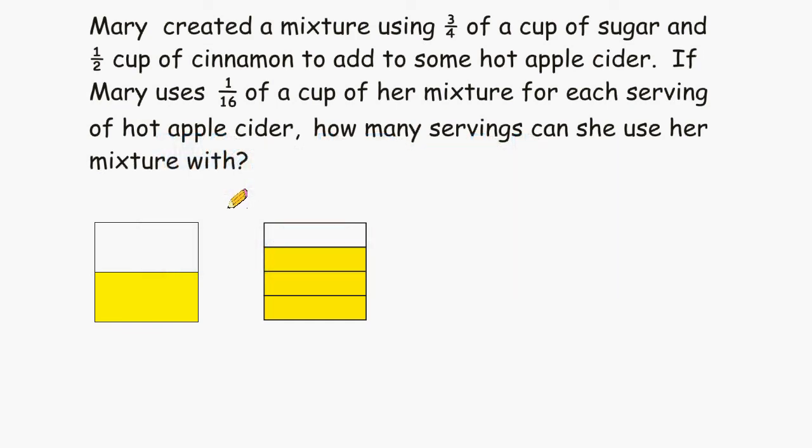This problem reads that Mary created a mixture using three-quarters of a cup of sugar and one-half cup of cinnamon to add to some hot apple cider. If Mary uses one-sixteenth of a cup of her mixture for each serving of hot apple cider, how many servings can she use her mixture with?